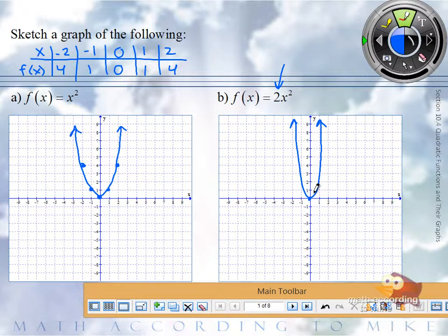So by multiplying the function by 2, you're multiplying all the y coordinates by 2. It's now negative 2, 8. So that means it's growing twice as fast.